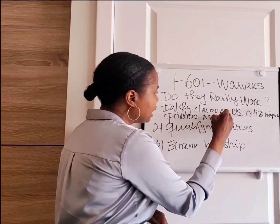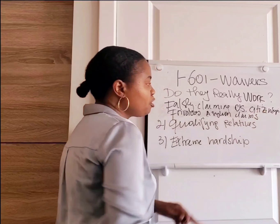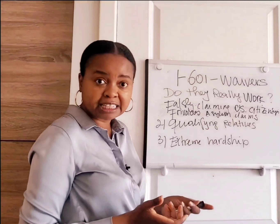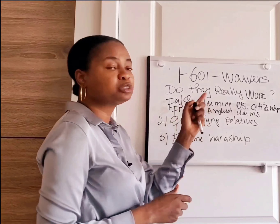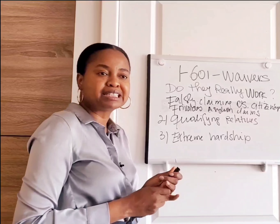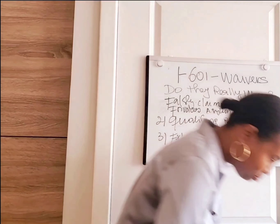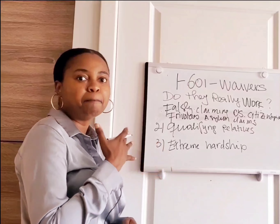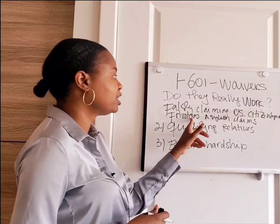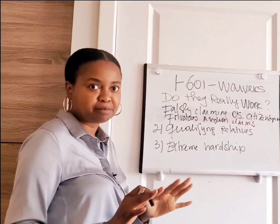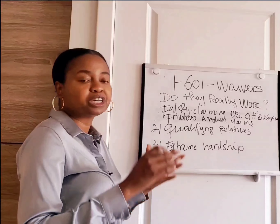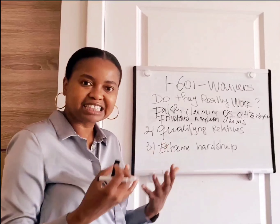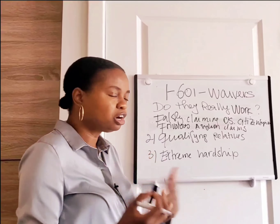Number two is a frivolous asylum claim. If you file a claim that is frivolous and you do not fight it and the decision becomes final, you cannot waive it. Frivolous simply means that the big portion of your claim is a lie or misrepresentation. You have to fight this one — if you do not fight it, it's going to stay like that and cannot be waived. That's why I always tell people: if you do not have a valid claim, don't go through the asylum application process.